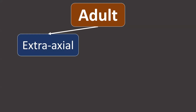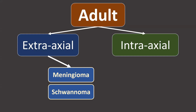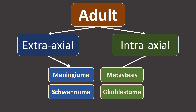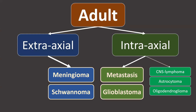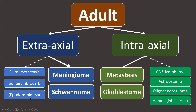Looking at the tumour as extra-axial or intra-axial, your differential is already very narrow. If extra-axial: meningioma or schwannoma. If intra-axial in an adult: metastasis or glioblastoma — about 70% of cases. Other intra-axial adult tumours include lymphoma, astrocytoma, oligodendroglioma, and hemangioblastoma. Extra-axial also includes dural metastases, solitary fibrous tumours, and epidermoid cysts. But focus on the most frequent ones.